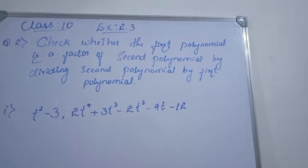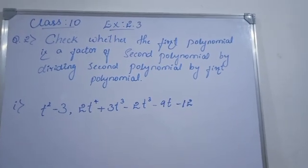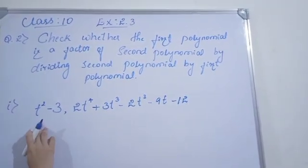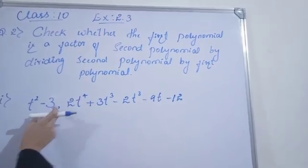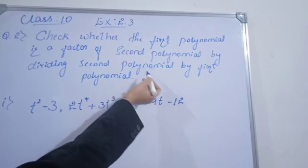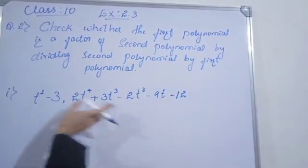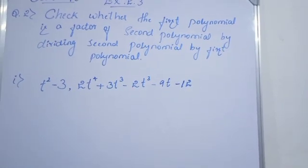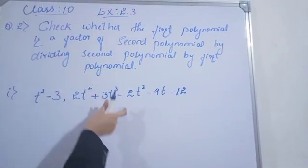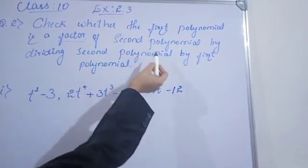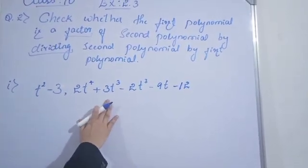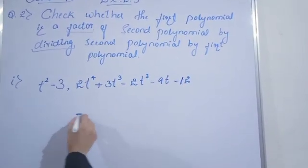Hello friends, today we are going to solve Exercise 2.3 Question 2. Here we check whether the first polynomial is a factor of the second polynomial. Two polynomials are given and we have to check if one is a factor of the other. We find this by dividing the second polynomial by the first polynomial. If the remainder is zero, then it is a factor.